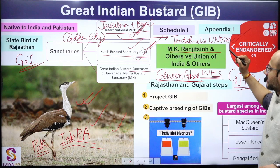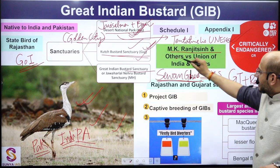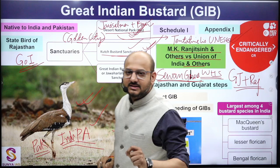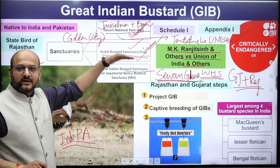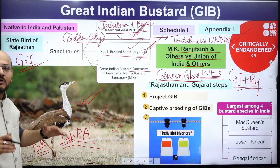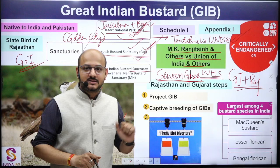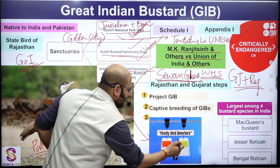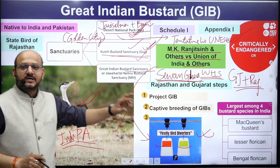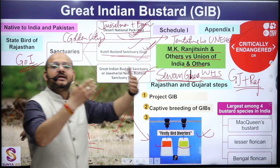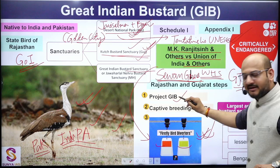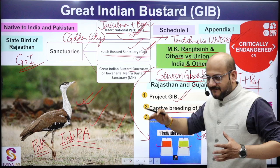A case was filed in the Supreme Court — MK Ranjit Singh and others versus Union of India — where the governments of Rajasthan and Gujarat were directed to address electrical lines in the area. These birds belong to the large bustard family, and their wings get entrapped in electrical lines causing death by electrocution. Therefore, bird diverters must be used — when a strong light reflection hits, birds get diverted and avoid electrocution. Other steps include Project Great Indian Bustard and captive breeding so that population can be introduced into the wild.